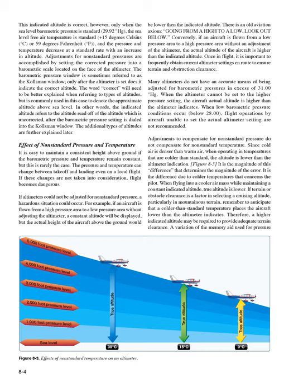Lower limit of white arc: VS0 — the stalling speed or minimum steady flight speed in the landing configuration (power-off stall speed at maximum landing weight with gear and flaps down). Upper limit of white arc: VFE — the maximum speed with flaps extended. Green arc — the normal operating range; most flying occurs within this range. Lower limit of green arc: VS1 — the stalling speed in a specified configuration (typically power-off at maximum takeoff weight, gear up if retractable, flaps up). Upper limit of green arc: VNO — the maximum structural cruising speed; do not exceed this speed except in smooth air. Yellow arc — caution range; fly within this range only in smooth air and then only with caution. Red line: VNE — never-exceed speed; operating above this speed is prohibited as it may result in damage or structural failure.